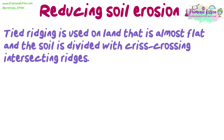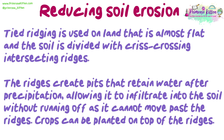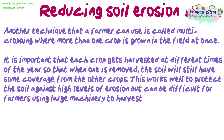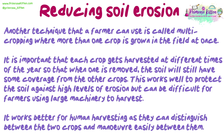Tied ridging is used on land that is almost flat, where the soil is divided with crisscrossing, intersecting ridges. The ridges create pits that retain water after precipitation, allowing it to infiltrate into the soil without running off, as it cannot move past the ridges. Crops can be planted on top of the ridges. Another technique is multi-cropping, where more than one crop is grown in a field at once. Each crop is harvested at different times of the year, so when one is removed, the soil still has coverage from the others. This works well to protect soil against erosion, but can be difficult for farmers using large machinery — it works better for human harvesting.